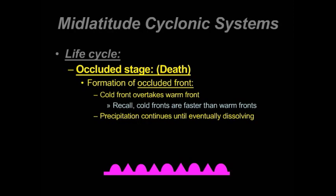Cold fronts move faster than warm fronts. As the cold front comes around the southern side of a low-pressure center, eventually it catches up to the warm front. When that occurs, we have reached the occluded stage — the end of a mid-latitude cyclonic system's life cycle. Precipitation often still occurs along this occluded front, and we see it on the weather map as a purple symbol. Red plus blue equals purple. You can also see the direction the occluded front is moving, and the semicircles and triangles combined in this symbol.